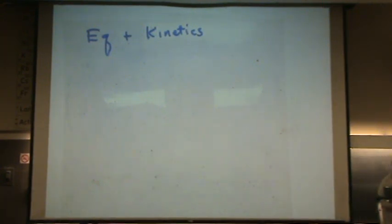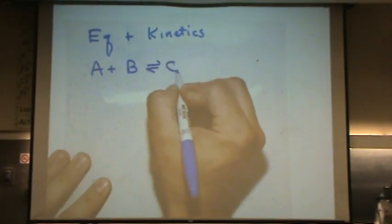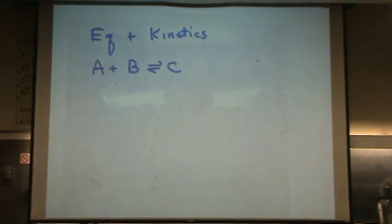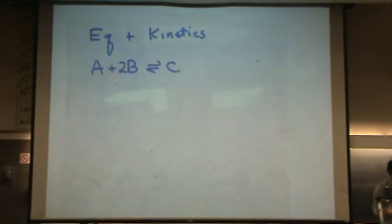Let's mix together equilibrium and kinetics. A plus B goes to C as a sample reaction. Let's make it more exciting: A plus 2B goes to C.